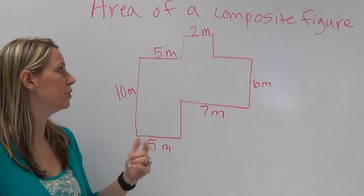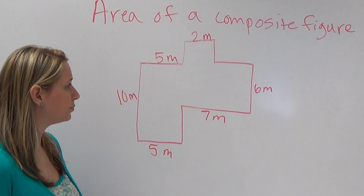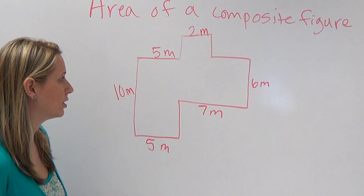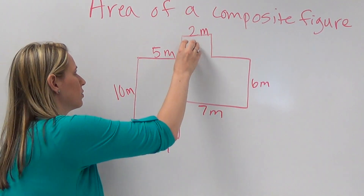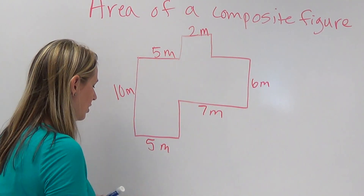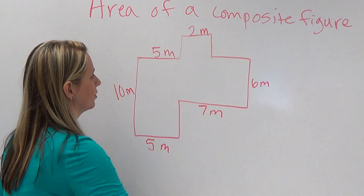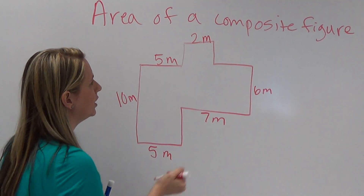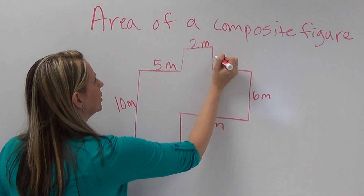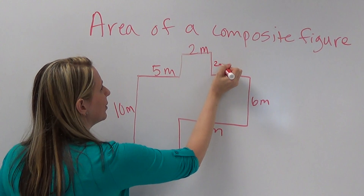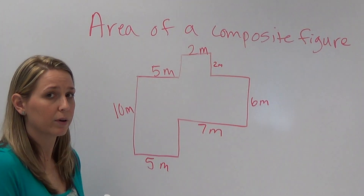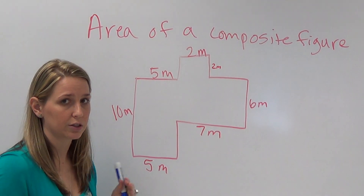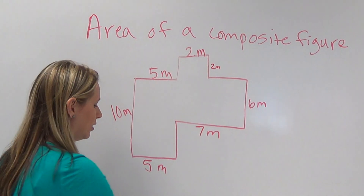For example, if you look at this one, you can see we've got a few different shapes here. We've got a little square here, a little rectangle here, and another little rectangle here. Basically what we're going to do is separate this into three different shapes that we can actually take the area of.